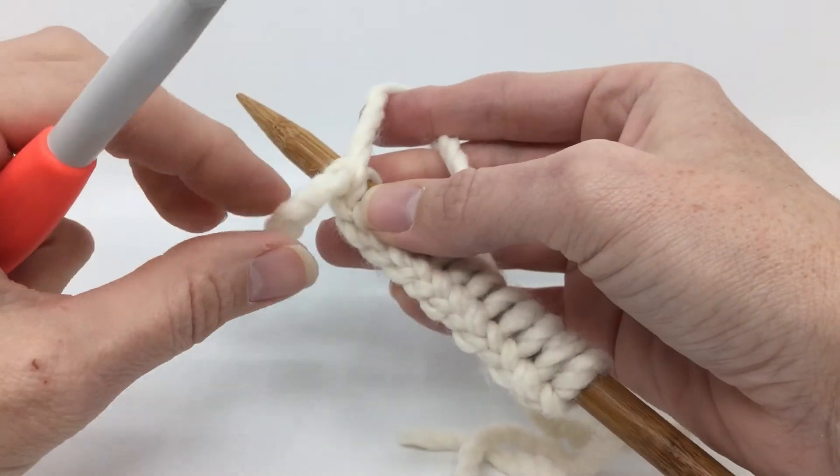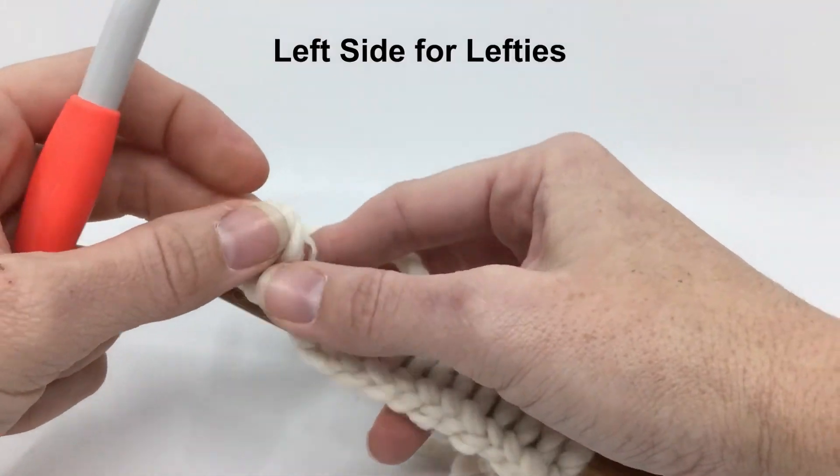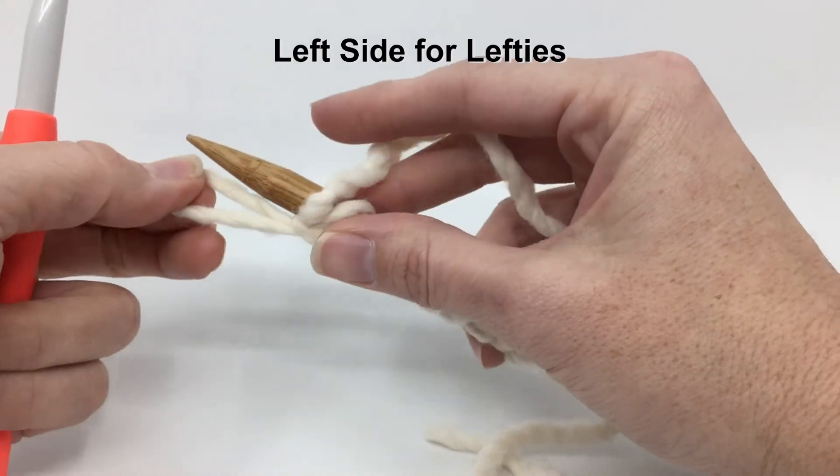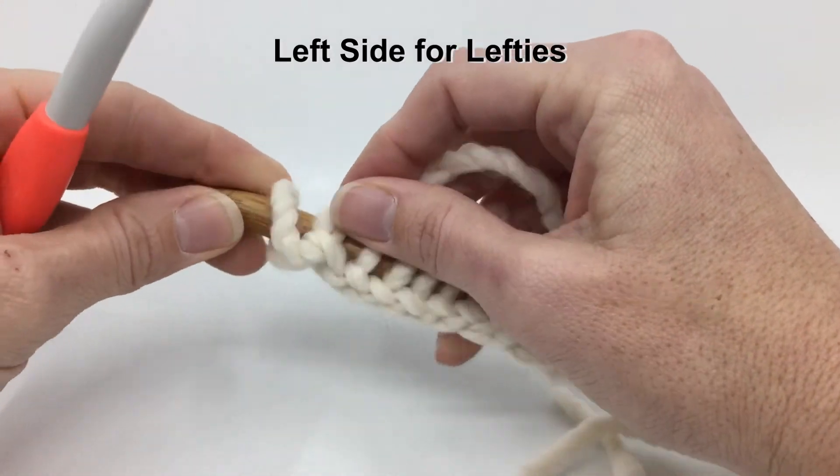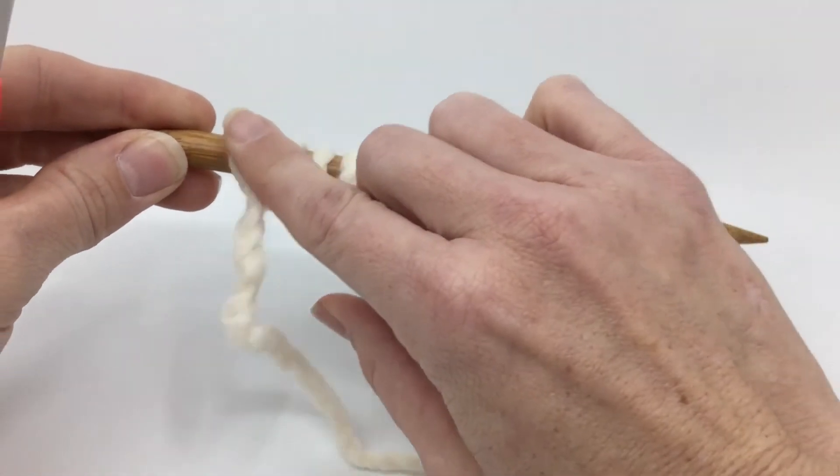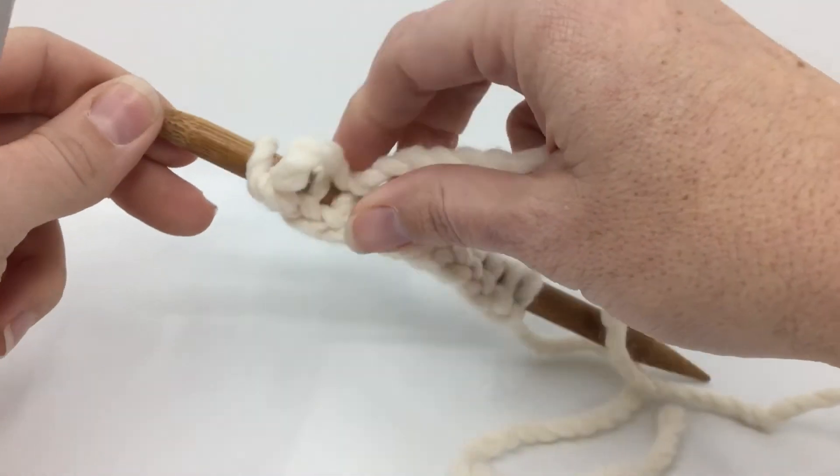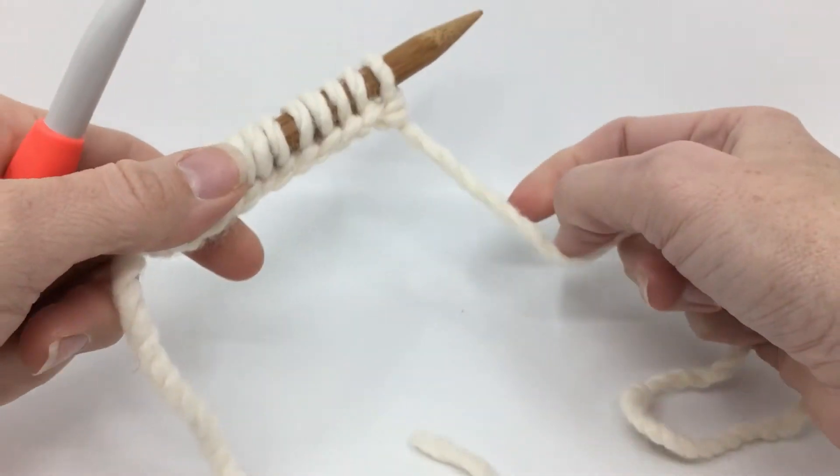We're going to pull it out and we're going to put it on our needle. We need to make sure though that we have that right side just like normal. We want the right side of our loop, so we kind of twist it to be in the front so that it's situated the right way just like the rest of them. And then you're ready to start your work.